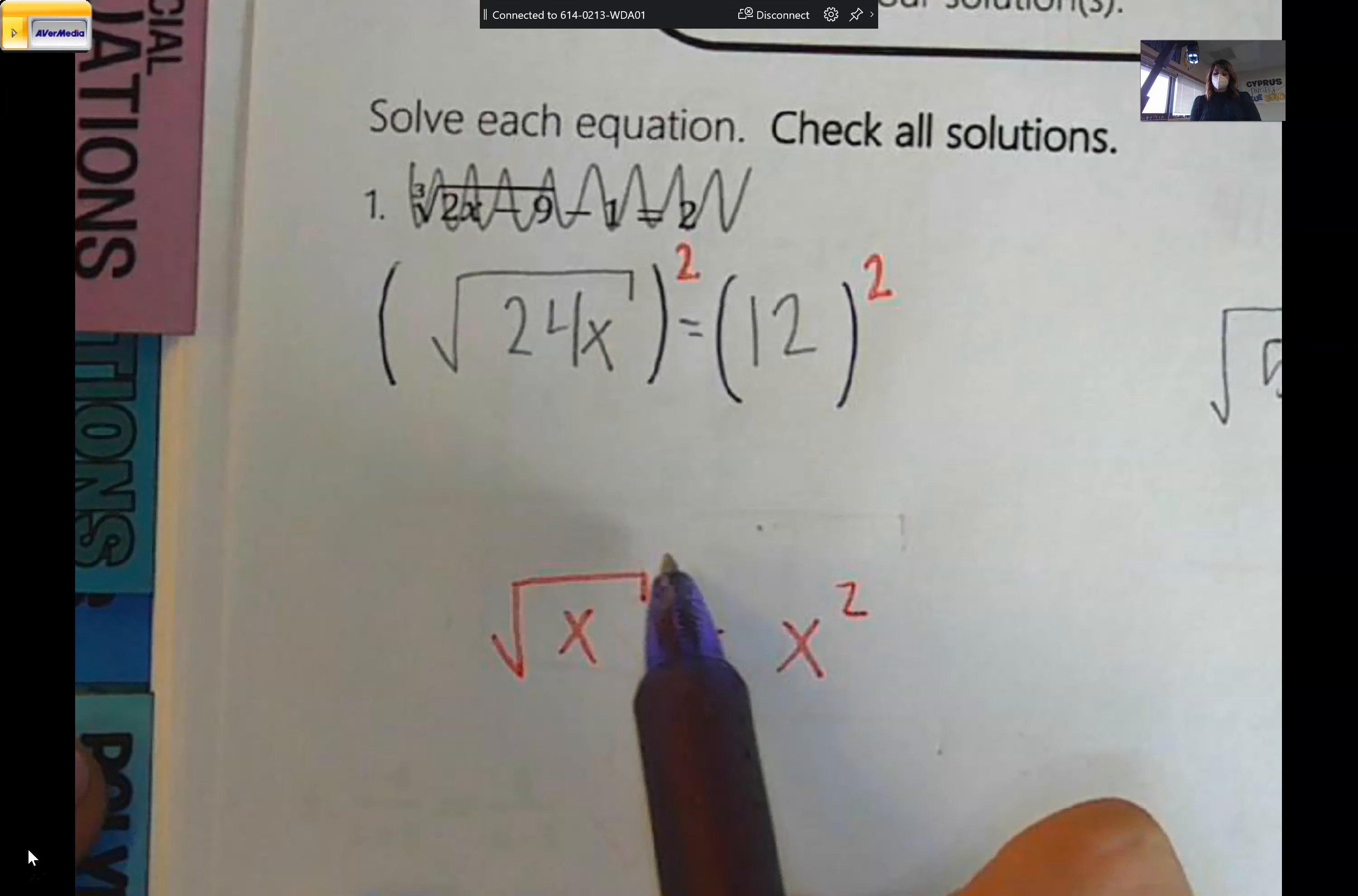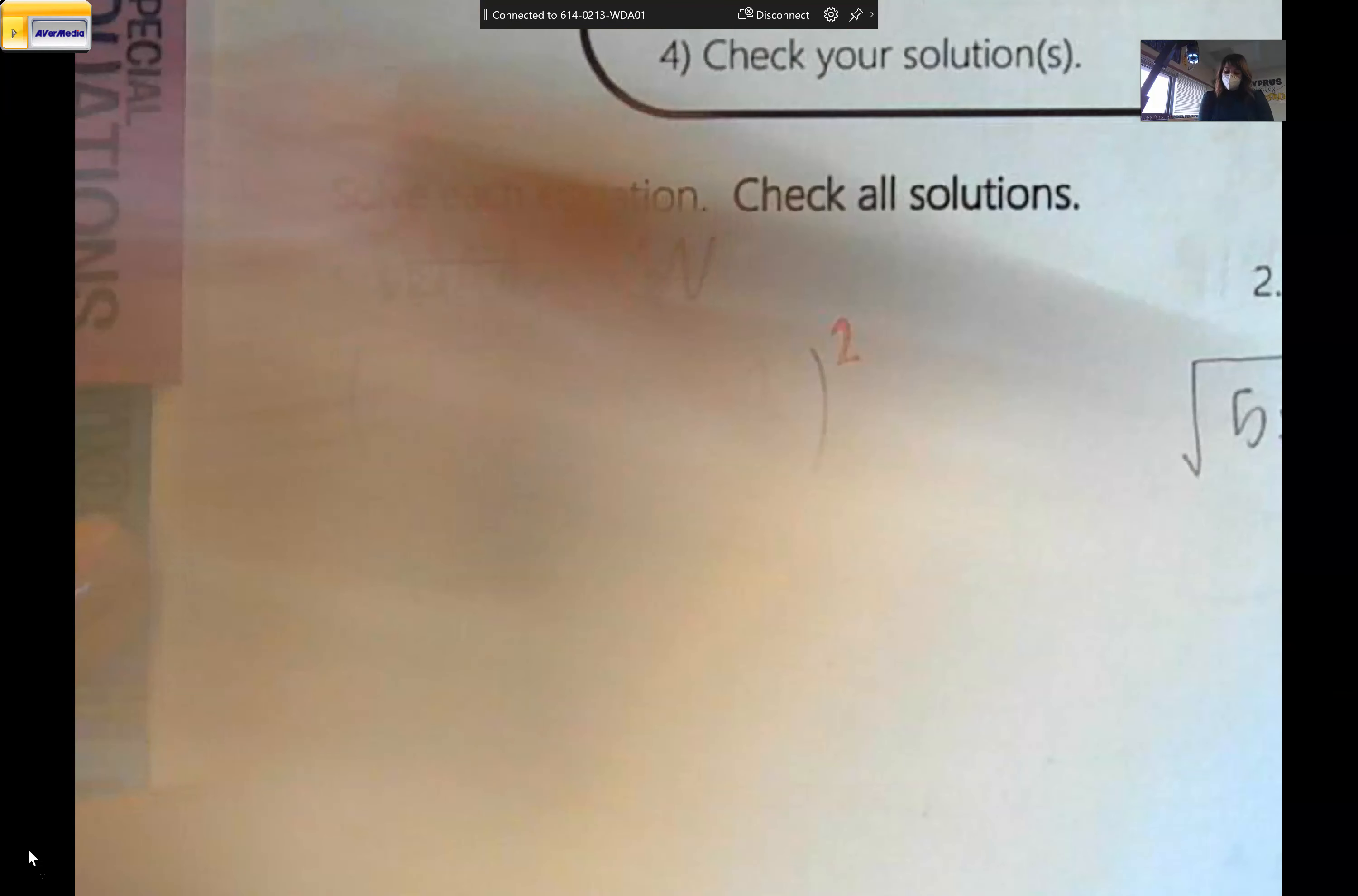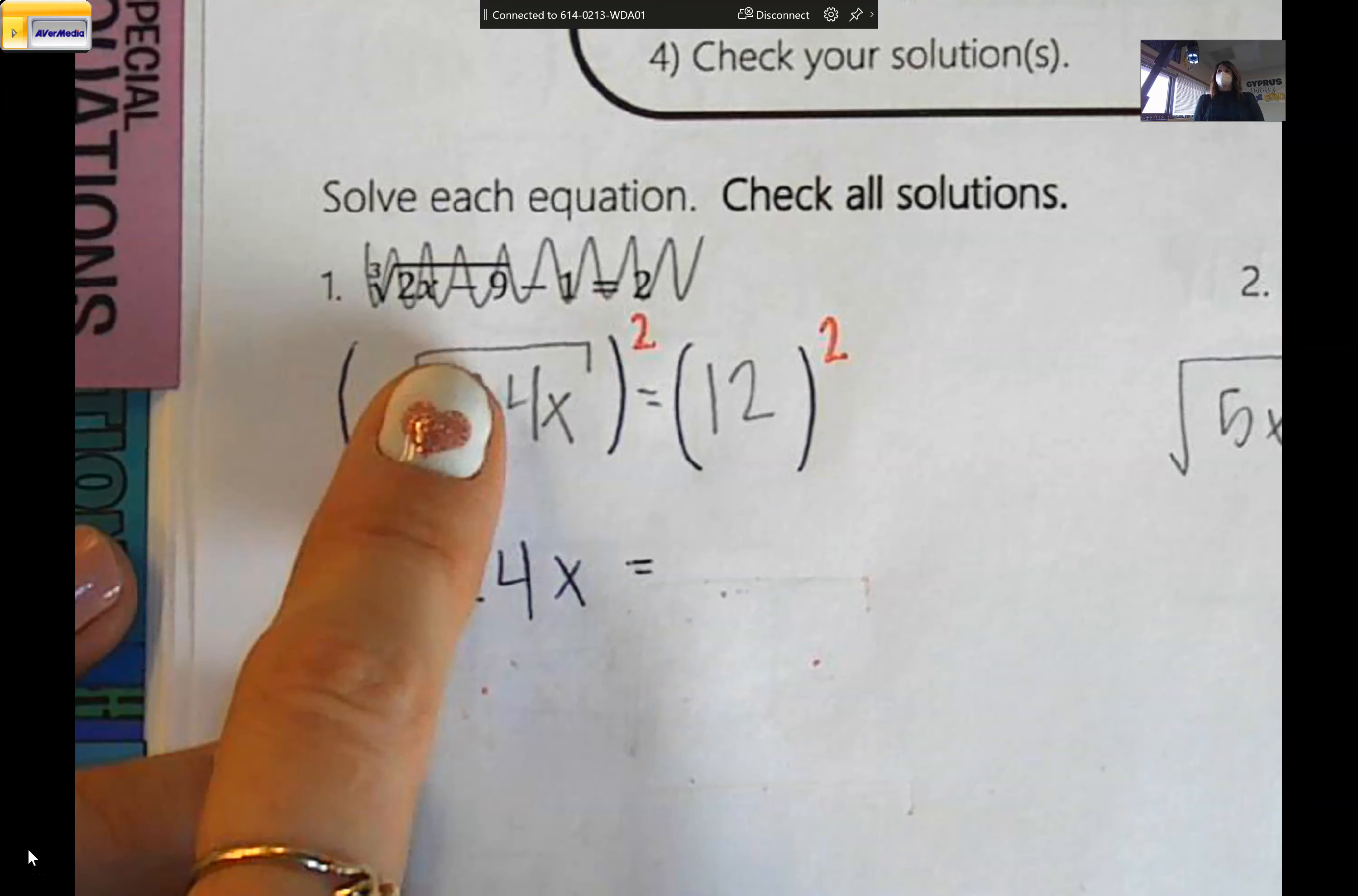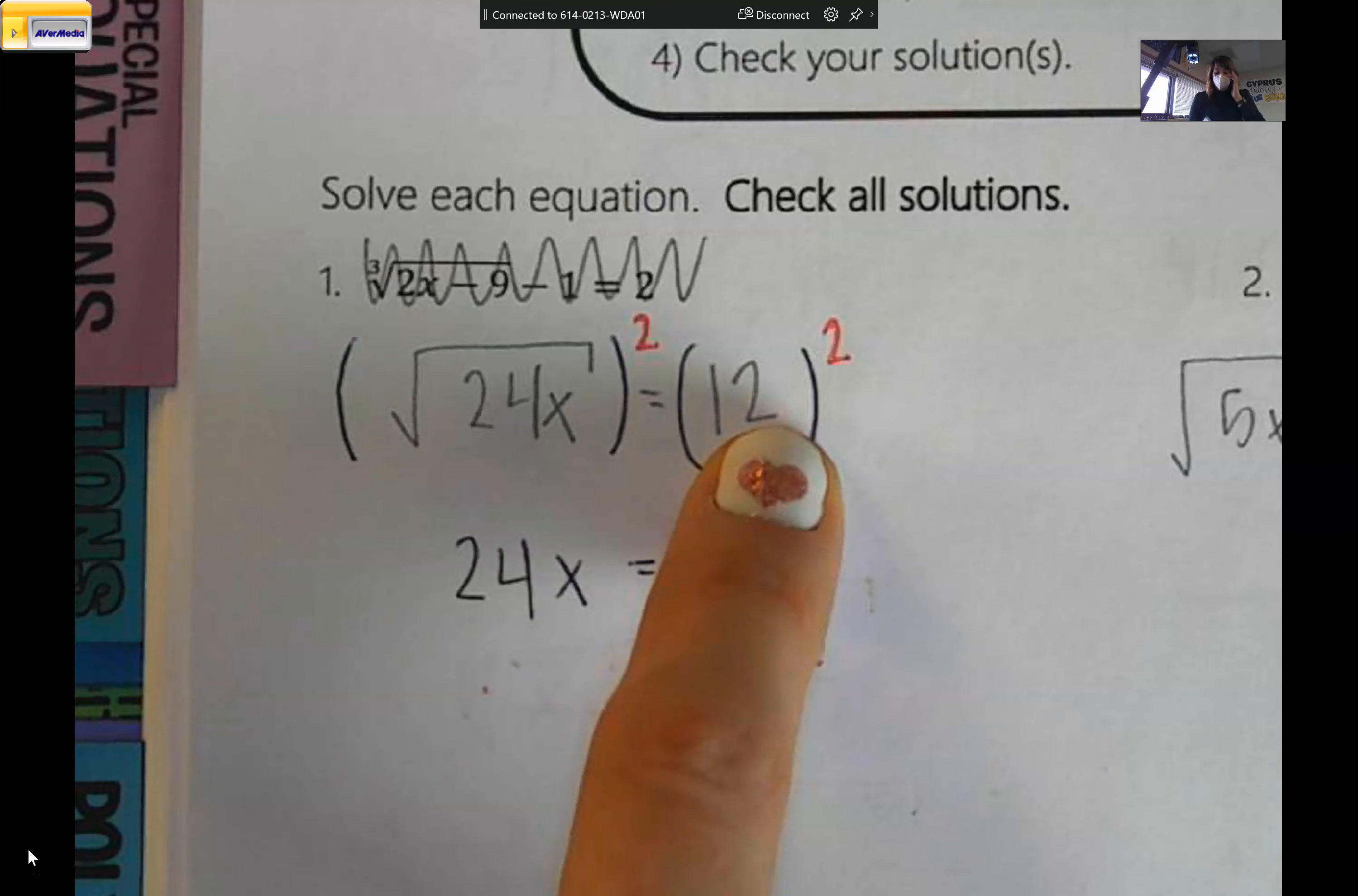We used to see radicals that looked like this that would have a little 3 here or a little 4. If it doesn't have anything, that means it's a 2. It's just a square root. When we square this side, the radical goes away because the square and the square root are inverses. The opposite of taking the square root is squaring the number. So when we do that, the radical goes away and what we're left with on the left-hand side is 24x. Then we just do 12 squared. So that's 12 times 12, which is 144.